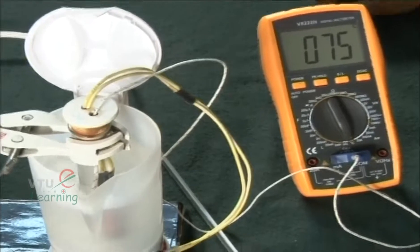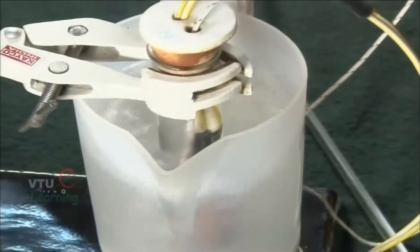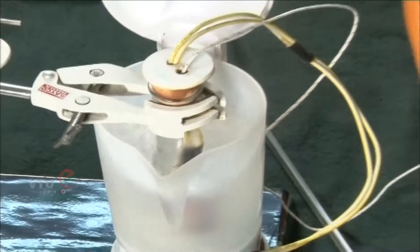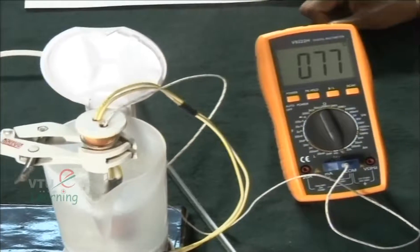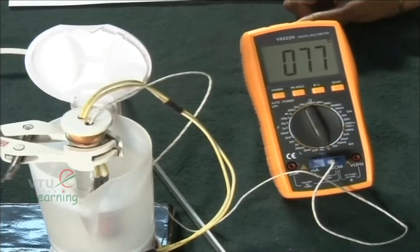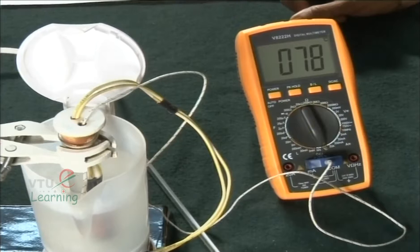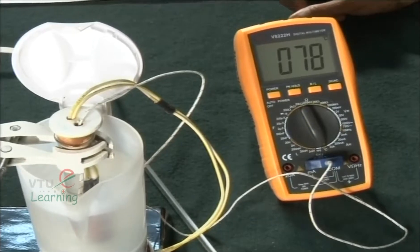You will see that the temperature is rising gradually and now it is almost touching 80 degrees. When it has touched something like 77 degrees, we have switched off so that with the heat already available to the coil, it rises to the required temperature of 80 degree centigrade.